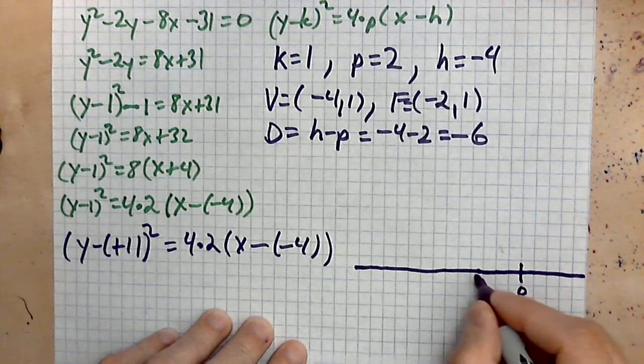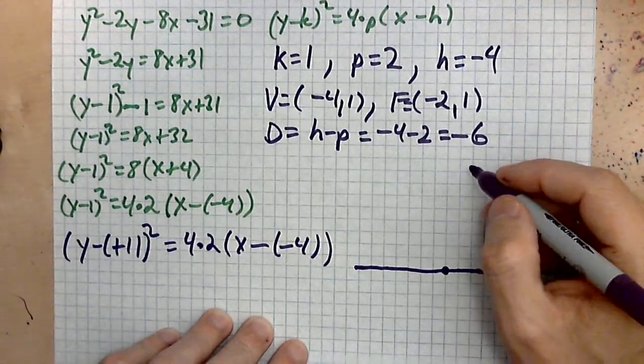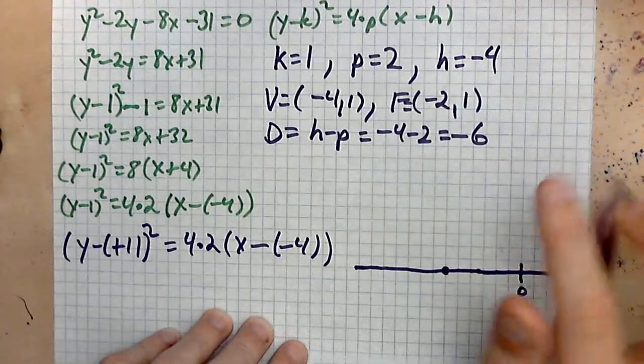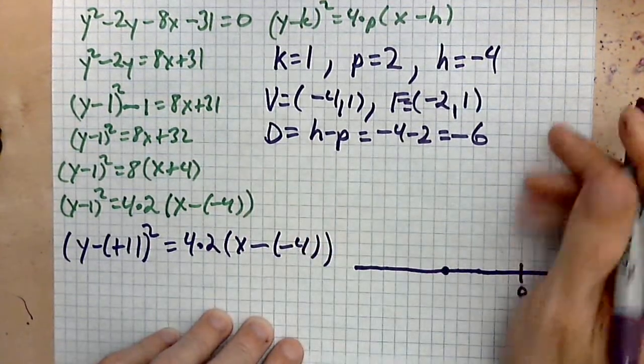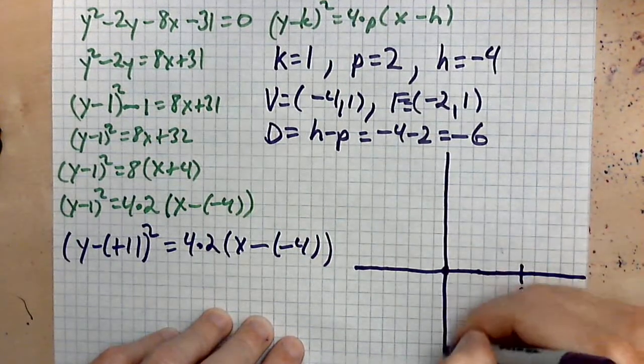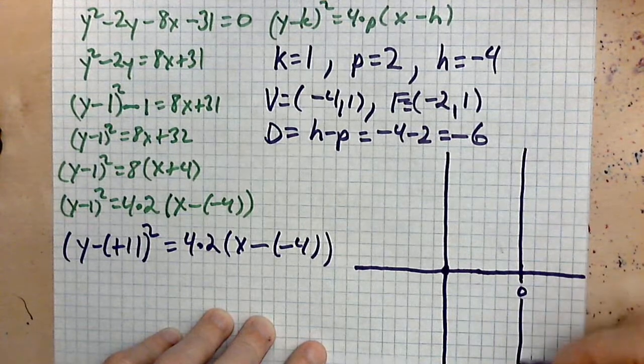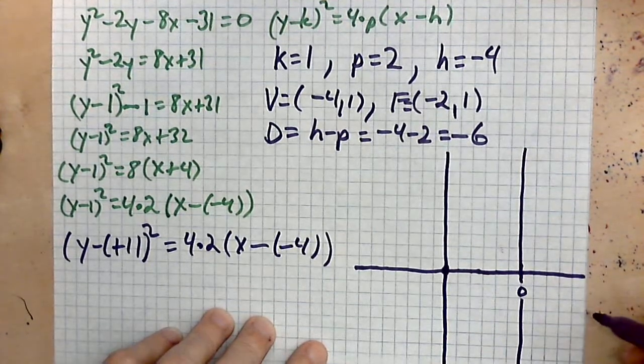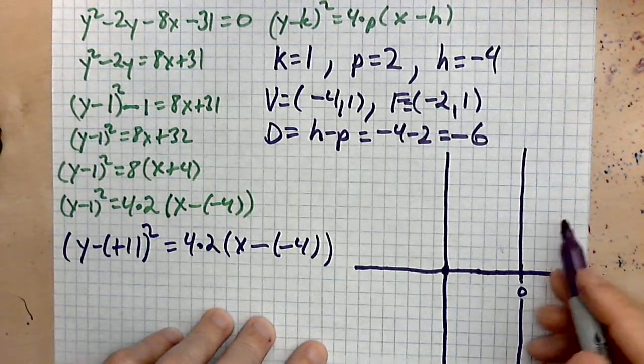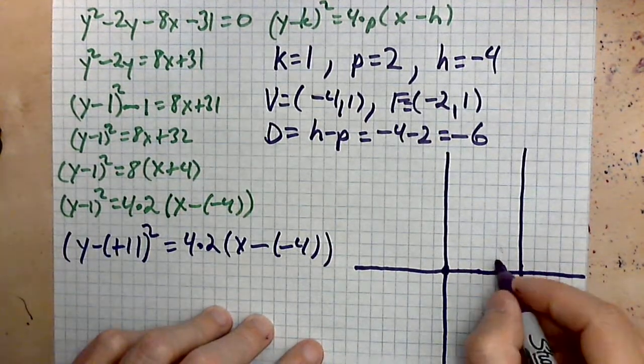This will be our directrix. Remember, for this kind of parabola, the directrix is a line that is vertical, so you may want to draw this is our directrix. The y-axis goes through here like that. The focus is at negative two comma one, so that is here.